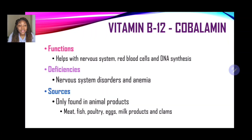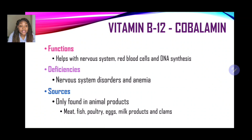Our next vitamin is vitamin B12. The scientific name is cobalamin. The functions of cobalamin are: it helps with the nervous system, also red blood cells, and DNA synthesis. The deficiency is nervous system disorders and also anemia. Previously, we learned about iron deficiency anemia — when the body is lacking the mineral iron. There is also a particular anemia associated with lacking vitamin B12, which we'll look at in the next slide.